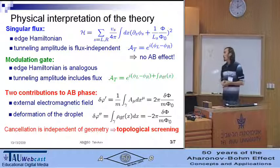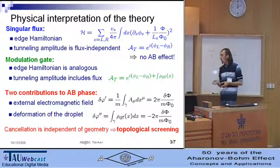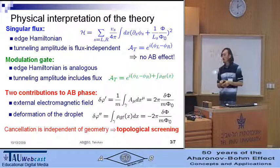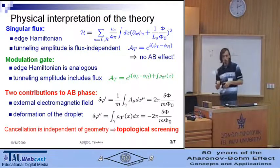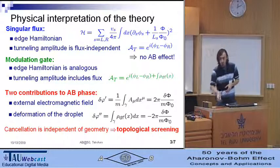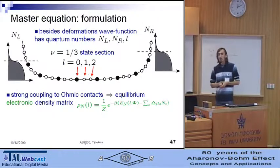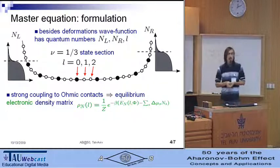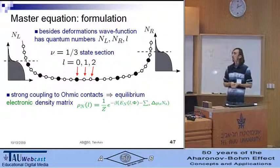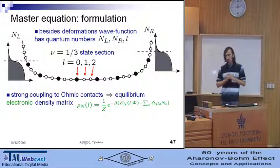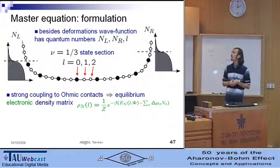So, we can interpret this as a topological screening of the singular flux by the bulk of quantum Hall liquid. Okay, after we have described the effective theory of the isolated quantum Hall liquid, we have to include the processes at the ohmic contacts.